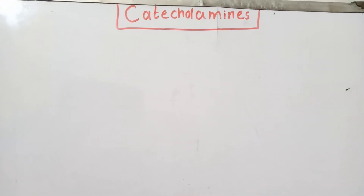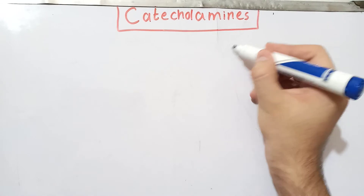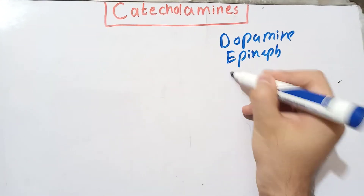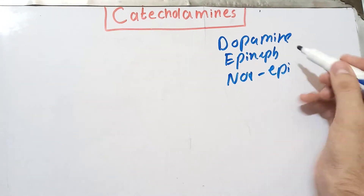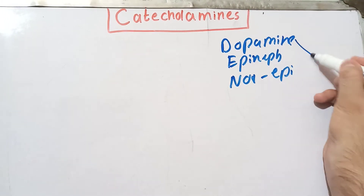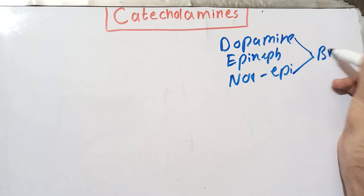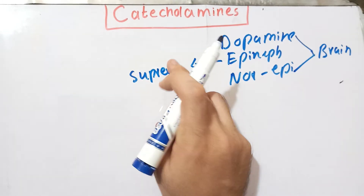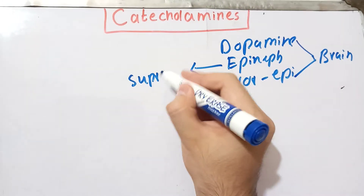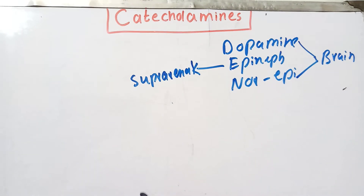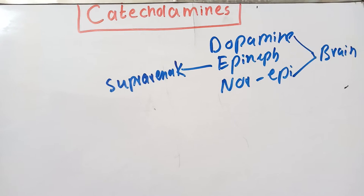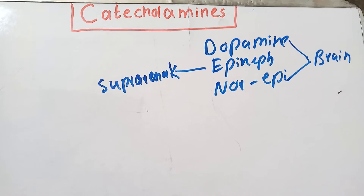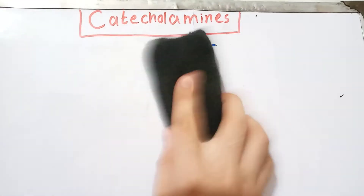The catecholamines are a group that contains three compounds: dopamine, norepinephrine, and epinephrine. The norepinephrine and dopamine are present mainly in the brain. Dopamine is a neurotransmitter present in the basal ganglia and some other brain structures. Epinephrine is present mainly in the suprarenal medulla. Epinephrine and norepinephrine are both associated with the sympathetic response — the fight-or-flight response.